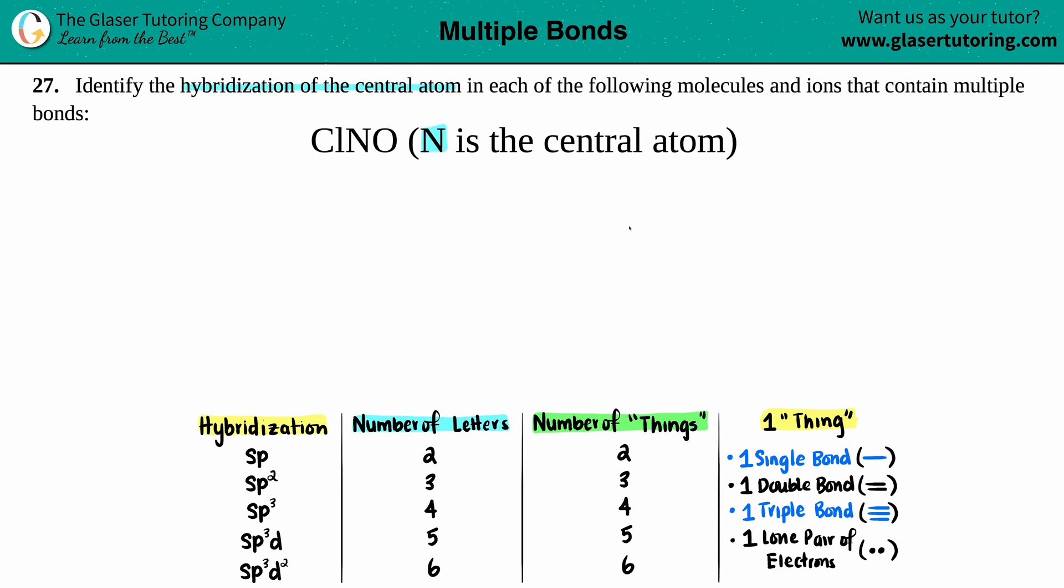Whenever we want to find hybridization, the easiest thing to do is always draw the Lewis structure first. This will be like a review - we have a whole playlist designated to how to draw Lewis structures.